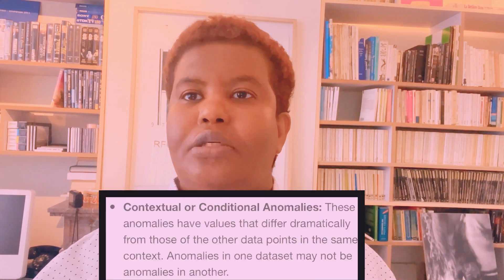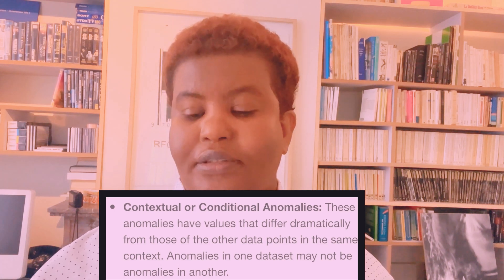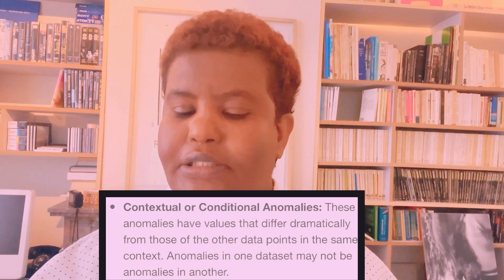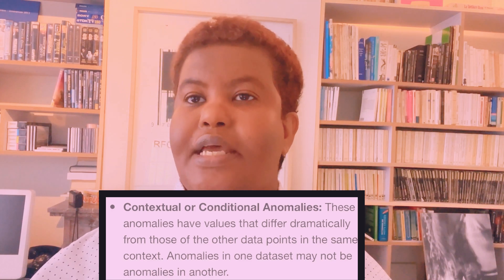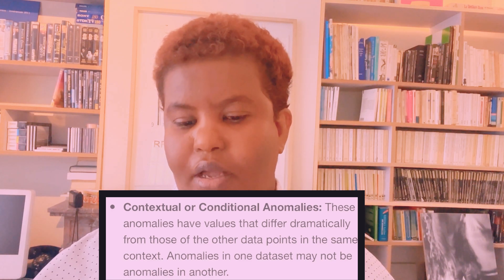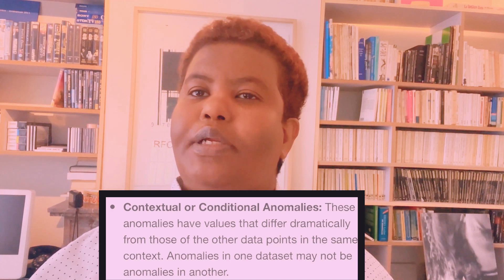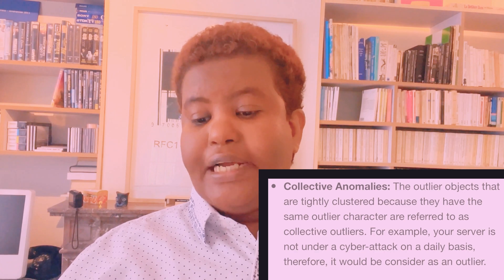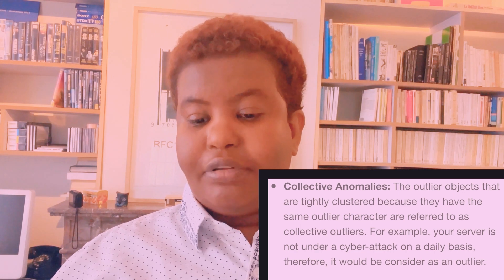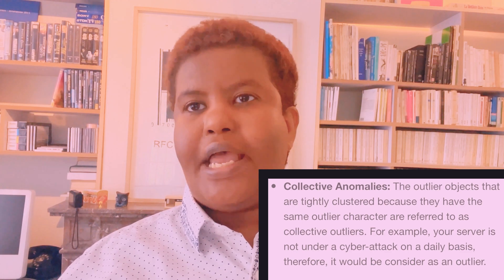The second type is contextual or conditional anomalies. These anomalies have values that differ dramatically from those of the other data points in the same context — anomalies in one dataset might not be anomalies in another. The third type is collective anomalies. Outlier objects that are tightly clustered because they share the same outlier character are referred to as collective outliers.